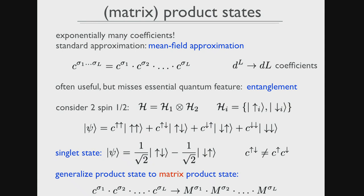One standard approximation is the mean field approximation. You assume each particle is exposed to effective fields produced by all other particles, meaning the many-body wave function factorizes site by site. The very complicated C_{σ_1...σ_L} — exponentially many coefficients — reduces to one factor per site, depending on the local state. Instead of d^L coefficients you get down to d times L coefficients. Mean field theory is extremely powerful and efficient.